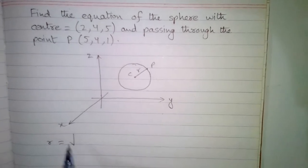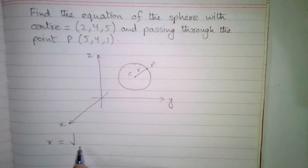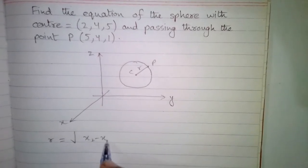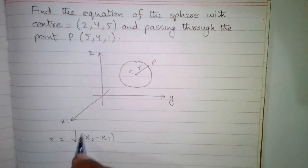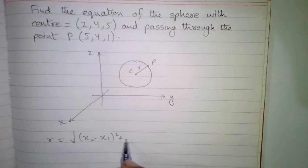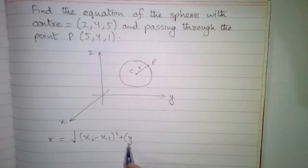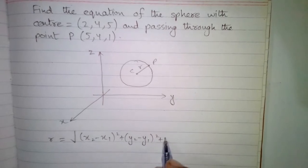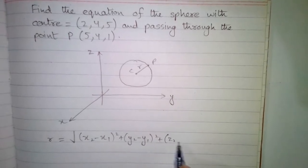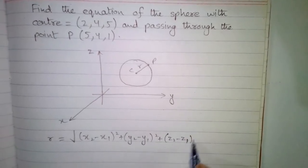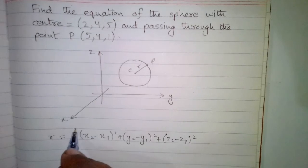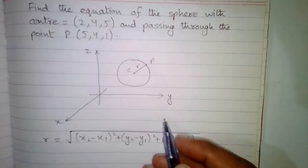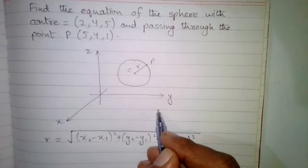The radius of the sphere can be found using the distance formula between two points, which is the square root of (x2 minus x1) whole square plus (y2 minus y1) whole square plus (z2 minus z1) whole square.